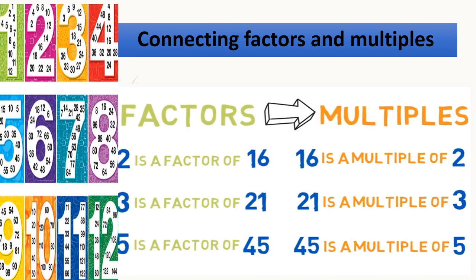Connecting to the factors and multiples, here are the examples children. 2 is a factor of 16, but 16 is a multiple of 2. Similarly, 3 is a factor of 21, but 21 is a multiple of 3. 5 is a factor of 45, but 45 is a multiple of 5. Please find the difference between what is a multiple and what is a factor.